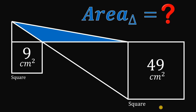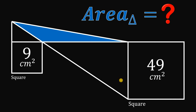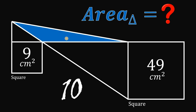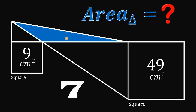Can you solve this geometry challenge? Here's the question. Given two squares having an area of 9 square centimeters and 49 square centimeters, our goal is to find the shaded region — the area of this triangle. You can pause this video if you want to give this problem a try.